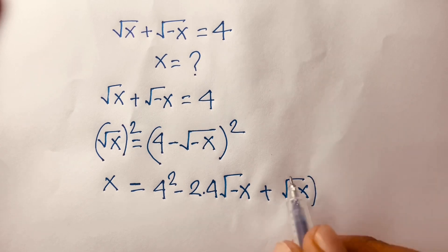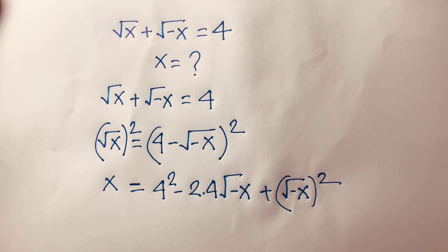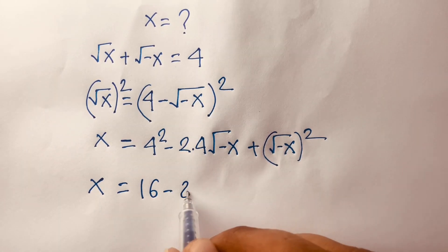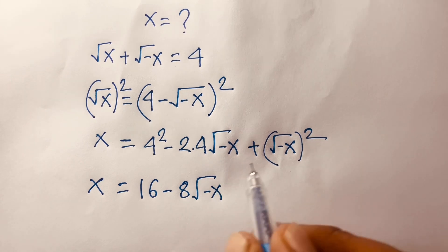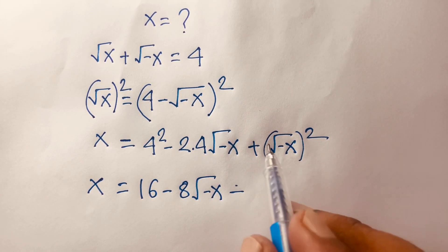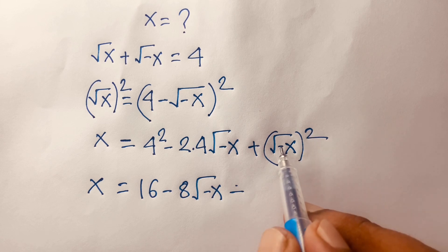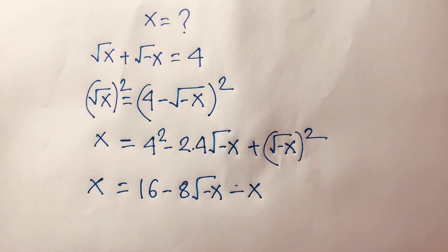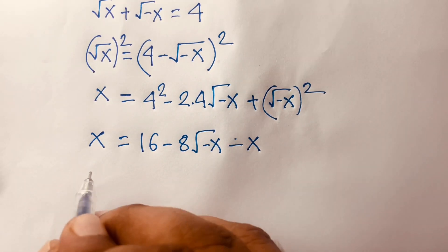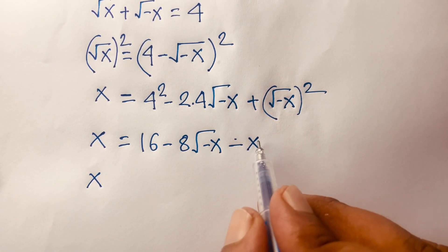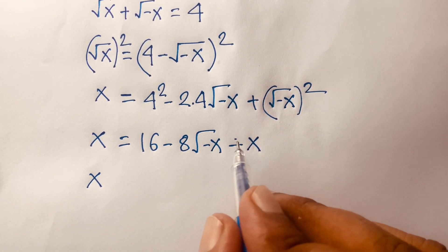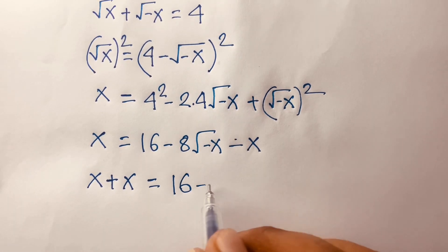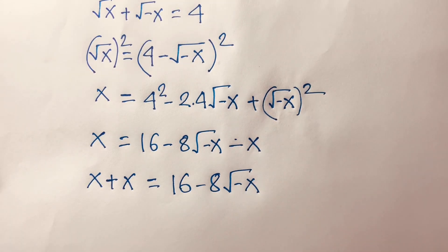This gives us x is equal to 16 minus 8 times square root of minus x, plus minus x. The square cancels, and the minus x moves to the left side, giving us x plus x is equal to 16 minus 8 times square root of minus x.